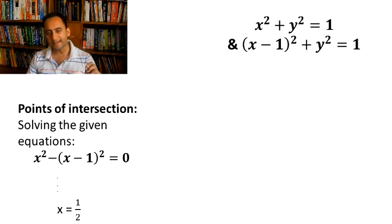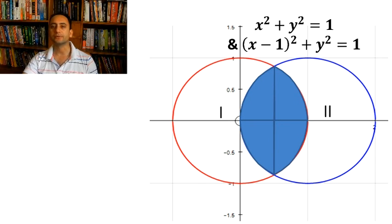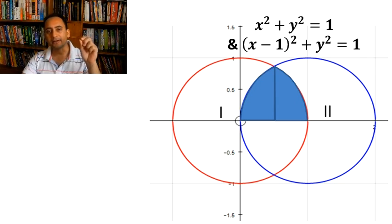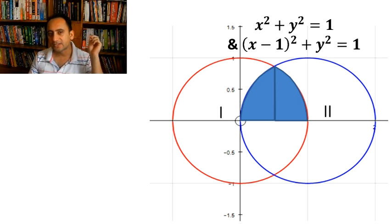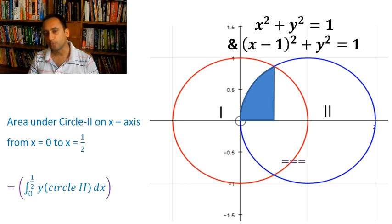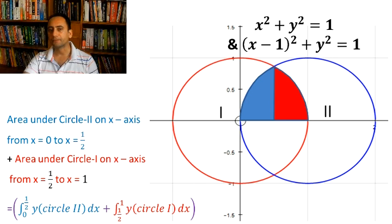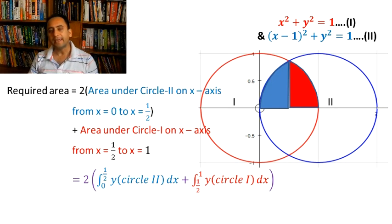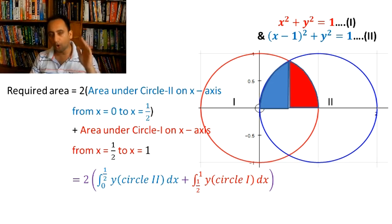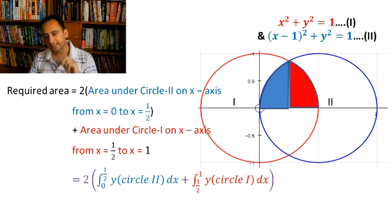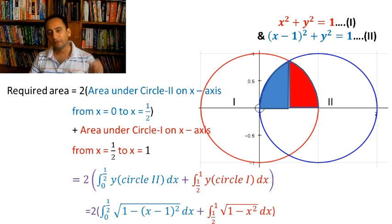Here are the graphs. The red circle is from equation 1 and the blue from equation 2. We need to find the area of the shaded region. It is more convenient to find the area in the first quadrant and double it. The shaded region is area under circle 2 from x = 0 to x = 1/2, plus area under circle 1 from x = 1/2 to x = 1. So the required area = 2 times [integral from 0 to 1/2 of y_circle2 dx + integral from 1/2 to 1 of y_circle1 dx], substituting y values from the given equations.